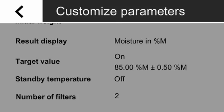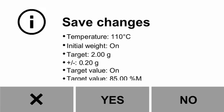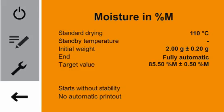You have now made all adjustments on the parameters for a pasty substance. Exit the window by tapping on Back. To save any changes, tap Yes. You are now in the main menu again. Please tap on Back.